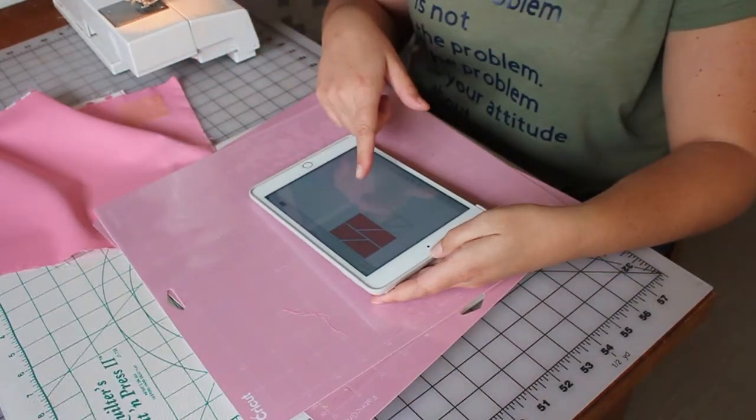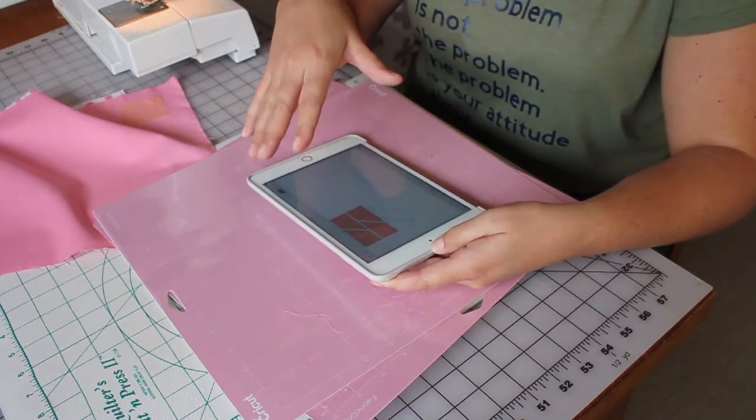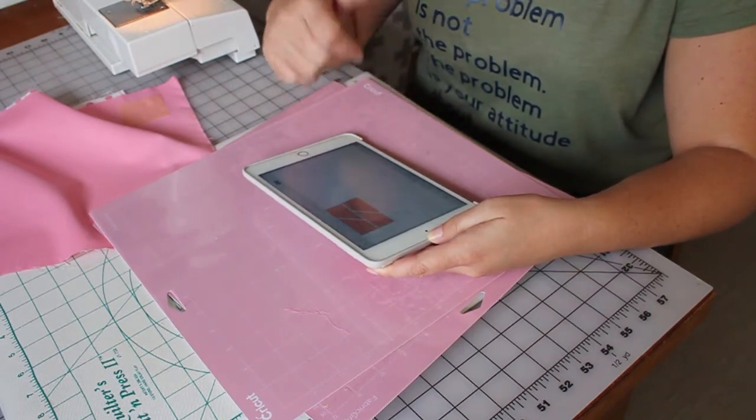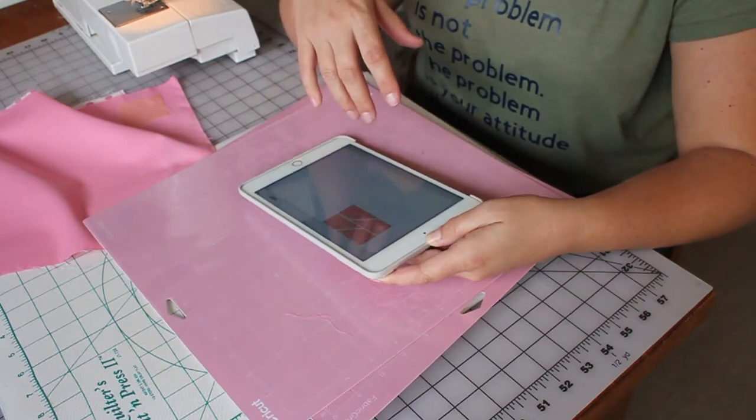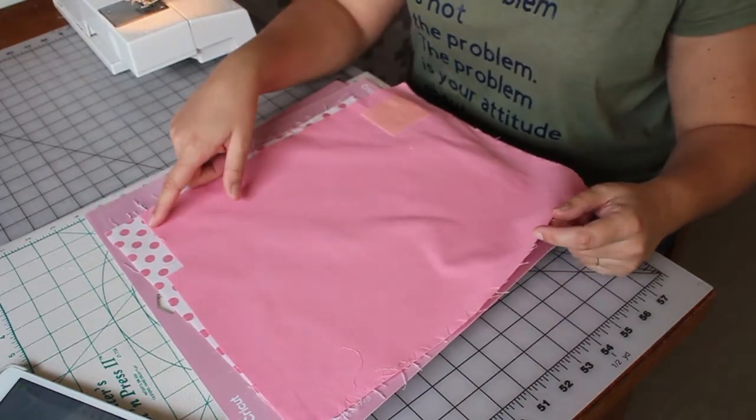So you're going to pull up your file on your device whether it be your mobile device or your laptop or desktop. Any device that's going to sync with your maker and where you have design space installed. And then we're going to use our pink fabric and our white fabric.